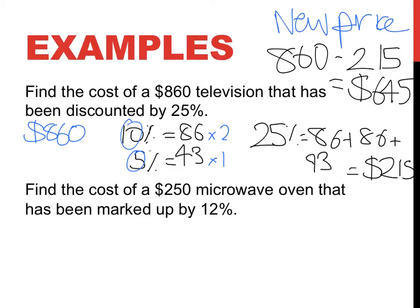Now this one down here, find the cost of a microwave that has been, a cost of a $250 microwave that has been marked up by 12%. Now you can do this in a few different ways. You can calculate 12% of $250 or you could, like on pen and paper.